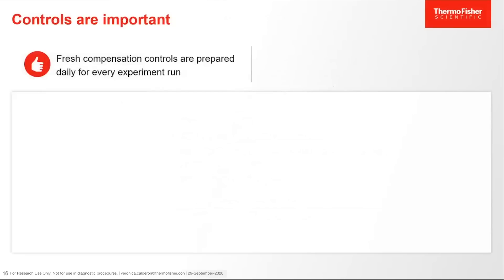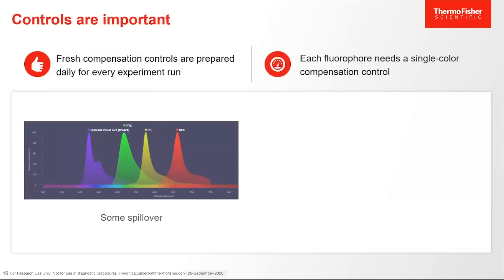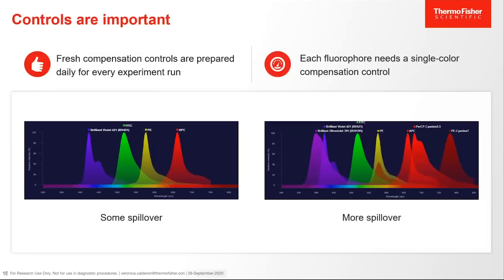Controls are important. Fresh compensation controls are prepared daily for each experimental run. There are day-to-day changes within your instrument's lasers that can occur, and light, temperature, and treatment changes can affect the performance of a fluorophore. Each fluorophore needs a single color compensation control. Whether doing a simple four-color panel or a more complex multicolor panel, spectral overlap will occur, and the spillover can affect the accuracy of the data.